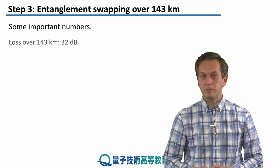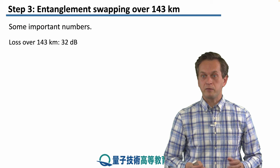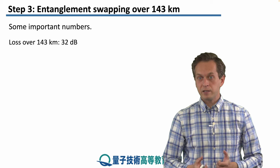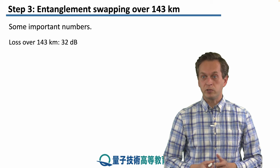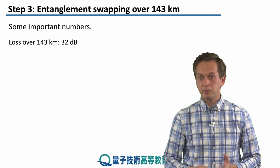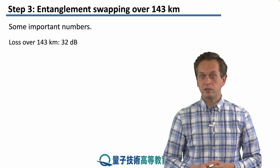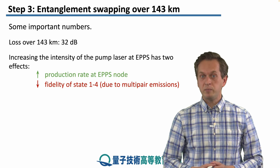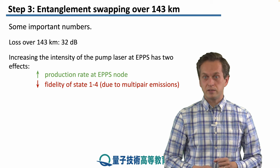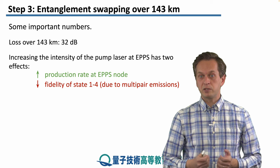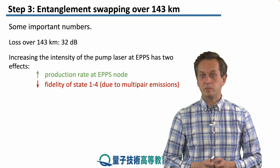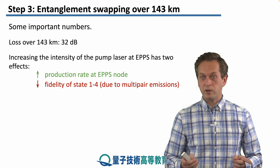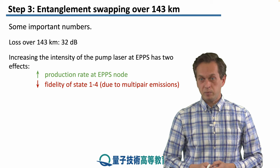The loss over the entire 143 km length was 32 dB — quite a lot. Paired with the stochastic process of generating entangled pairs, it is desirable to have a very bright source, meaning many pairs generated per second. This can be achieved by increasing the intensity of the pump laser at the EPPS nodes. However, this has two effects: the positive effect is that the production rate increases, but on the other hand, the fidelity of the state projected between photons 1 and 4 decreases due to multi-pair emissions at the EPPS nodes.